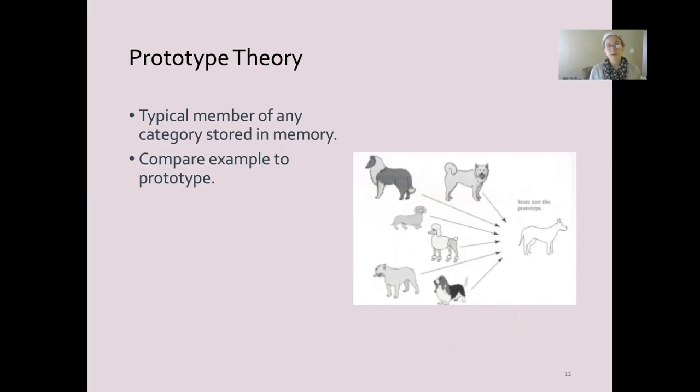So your prototype of a dog is probably going to be like the most sort of average dog to you. And then you would most easily recognize dogs that are similar to that prototype, which might look something like a golden retriever or a lab, at least it does in my head. And then the ones that are least similar to that prototype, like a chihuahua, wiener dog, Irish wolfhound, those types of things that are kind of far off from that prototype are going to be taking longer to recognize.